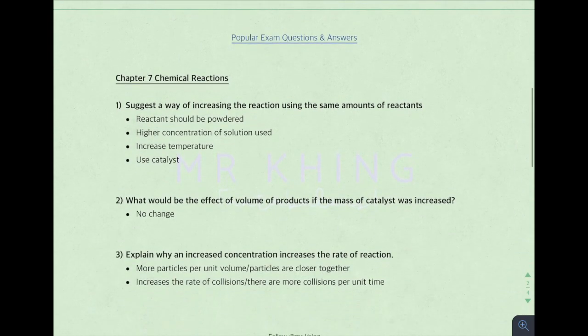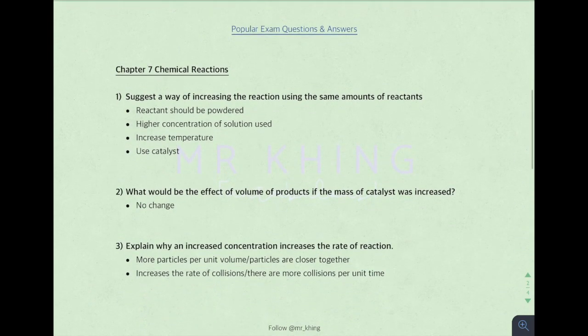So next. See chapter seven, chemical reaction. How can you increase the rate of reaction? See powder form because greater total surface area. Then higher concentration, increase temperature and use catalyst.